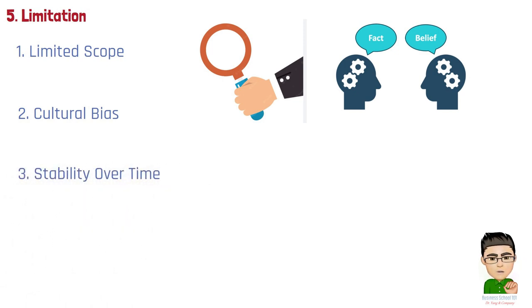Third, stability over time. The big five traits tend to be relatively stable over time, which may not fully account for personality changes and developmental shifts that can occur throughout a person's life.